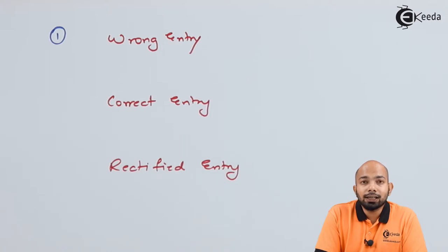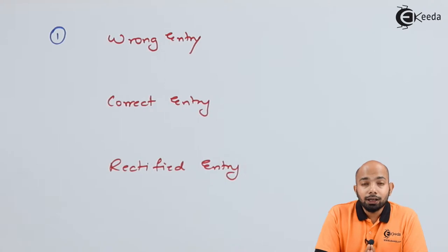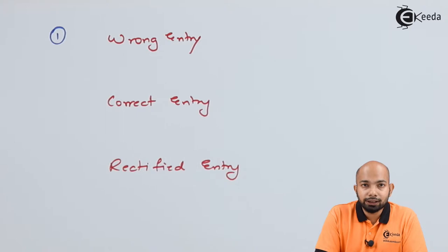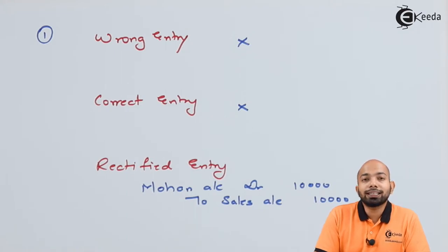For the first example — credit sales of rupees 10,000 to Mohan not posted to his account — the transaction has been completely omitted from the journal entries. Since it is a complete omission error, it doesn't affect the trial balance. Hence, it will not have a wrong entry or a correct entry; it will just have a rectified entry. I've marked a cross here to indicate complete omission.